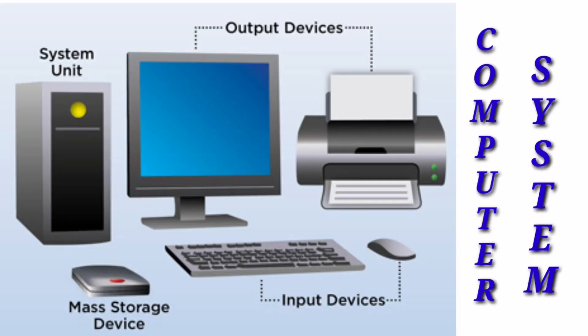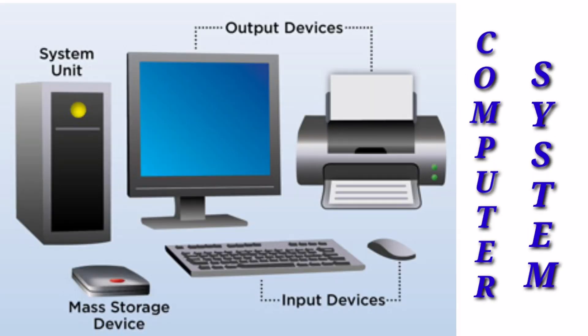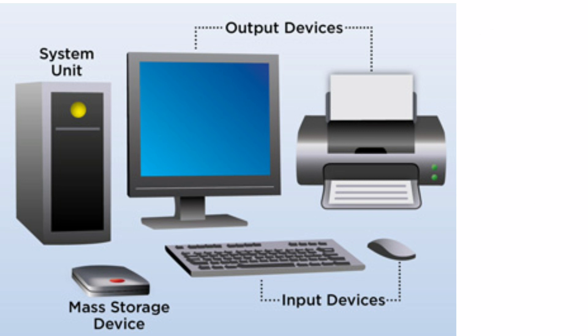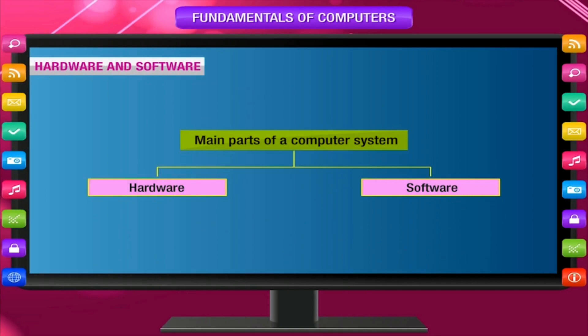A computer system is an amazing machine that can do different types of jobs. It has different parts that work together to form a computer system. The two basic parts of a computer system are hardware and software.